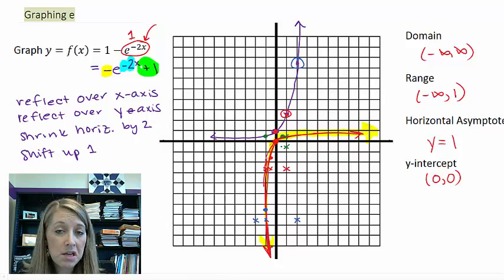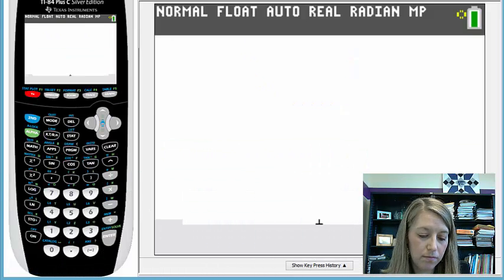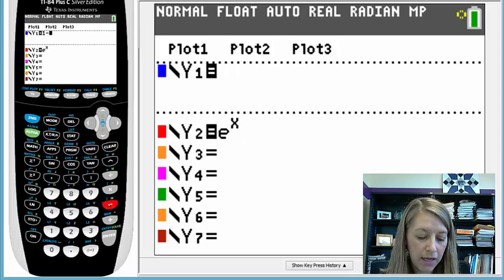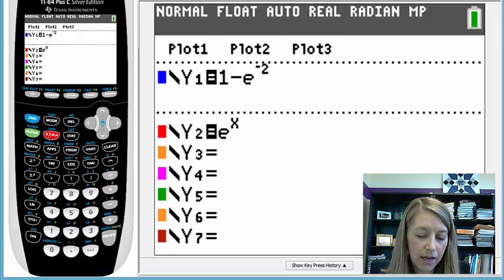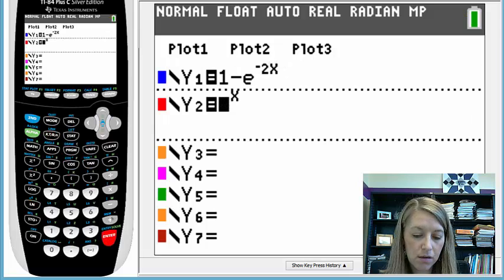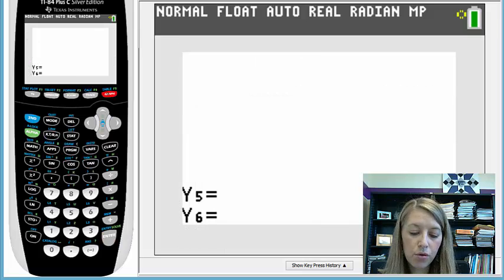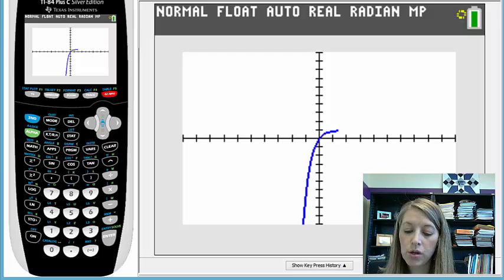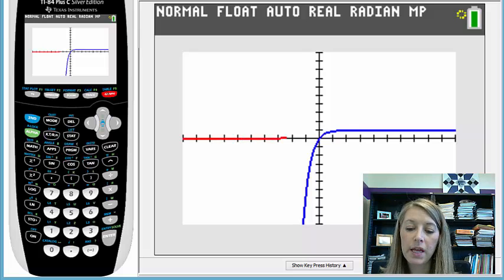If you want to double-check this, I encourage you to do so. Let's go ahead and graph this in our calculator. So I have 1 minus e to the negative 2x. And so the blue should be my transformed and the red will be my original. So here's my transformed blue. And of course my red is the original. So I believe that we've transformed it correctly and we have everything good to go.